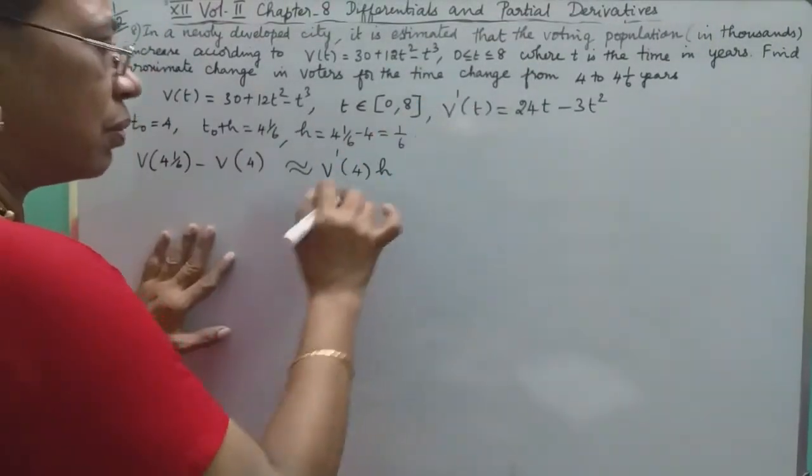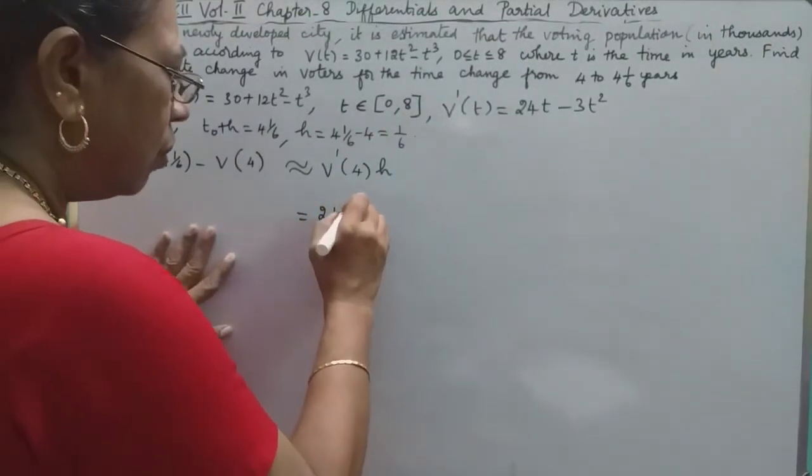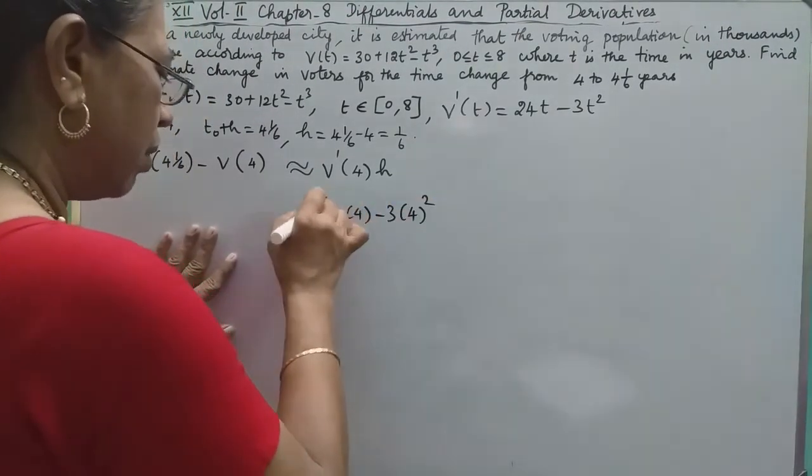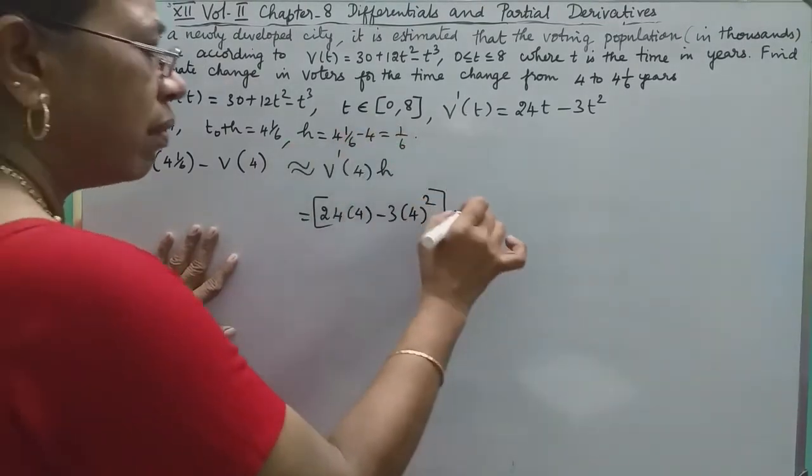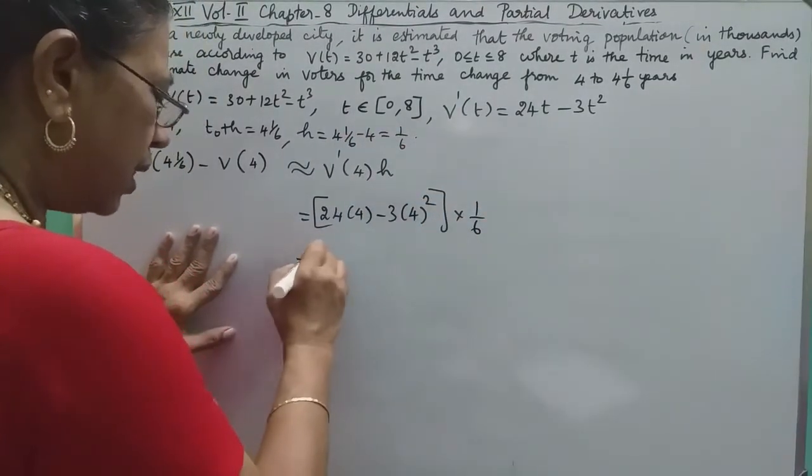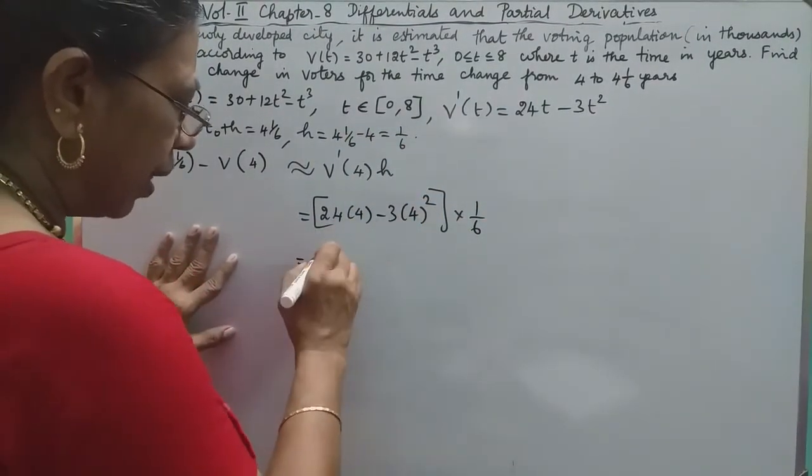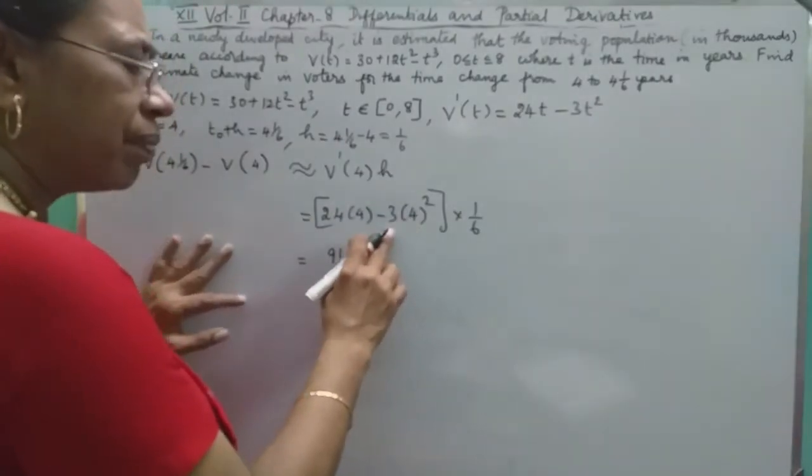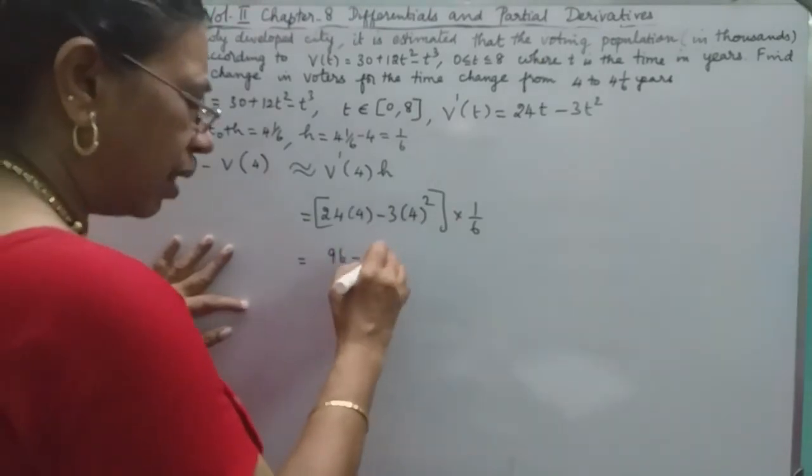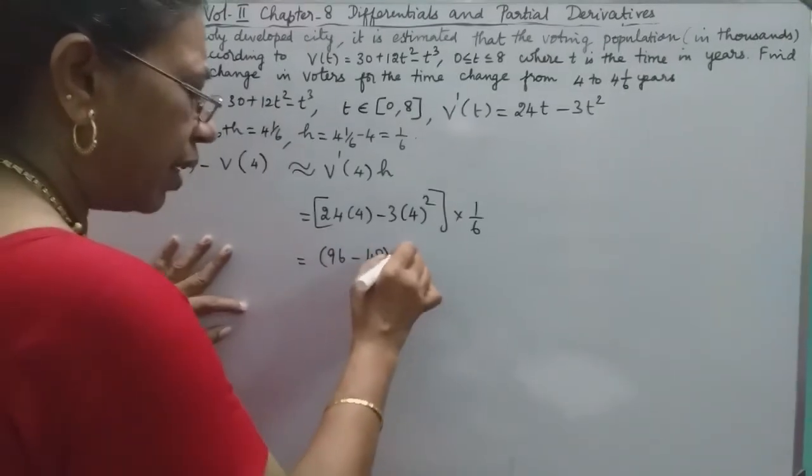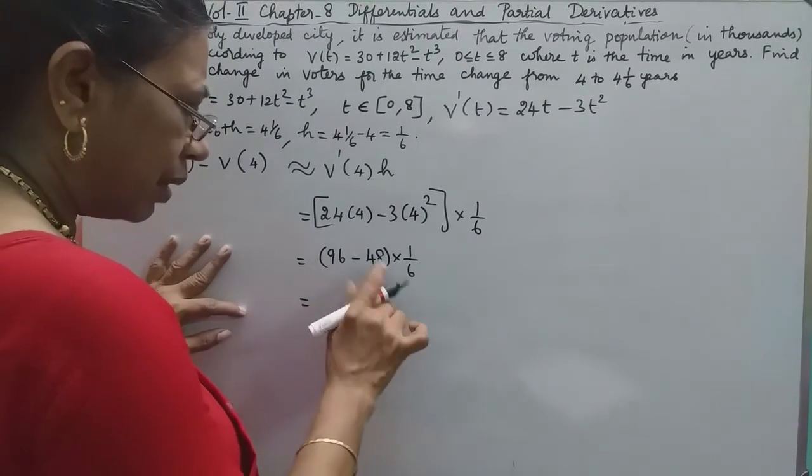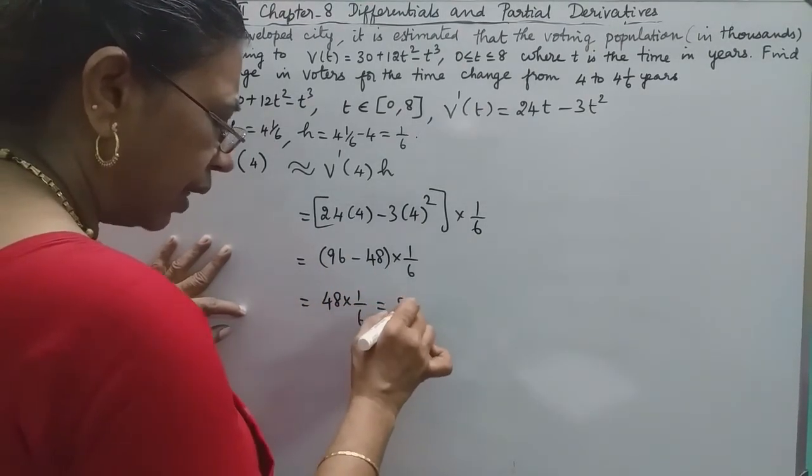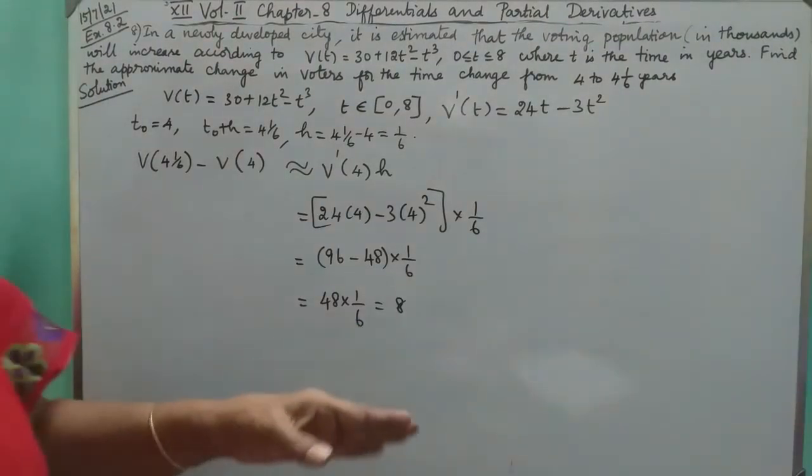Now we substitute 4. So 24 × 4 minus 3 × 4². This into 1/6. That is 24 × 4 is 96. 4² is 16, so 3 × 16 is 48. 96 minus 48 is 48. 48 × 1/6, if we subtract, that is equal to 8. The difference is 8.